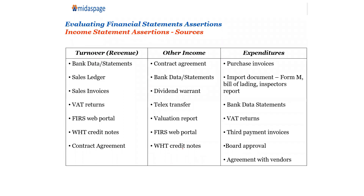For expenditure, ask for the purchase receipts — where is the invoice they give you? Also ask for import documents. If the products were imported, where is the Form M used in paying the vendor or supplier? Where is the bill of lading? Where is the inspector's report? These are documents you can use to confirm expenditure.